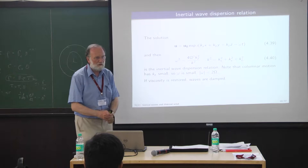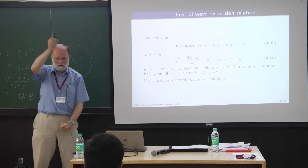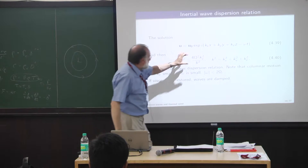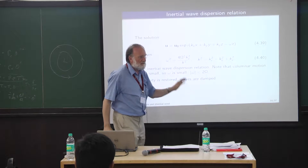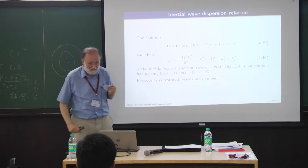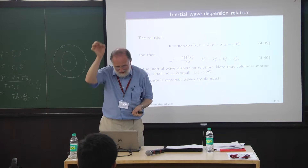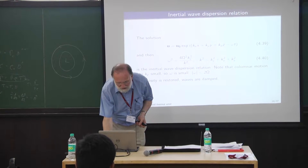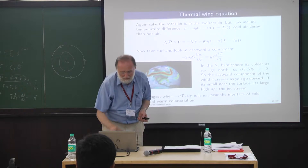You can get slightly longer period waves by making k_z as small as possible — almost geostrophic motions give periods a bit longer than a day, but never hugely longer. Unless k_z is exactly zero, and when viscosity is restored the waves are damped.